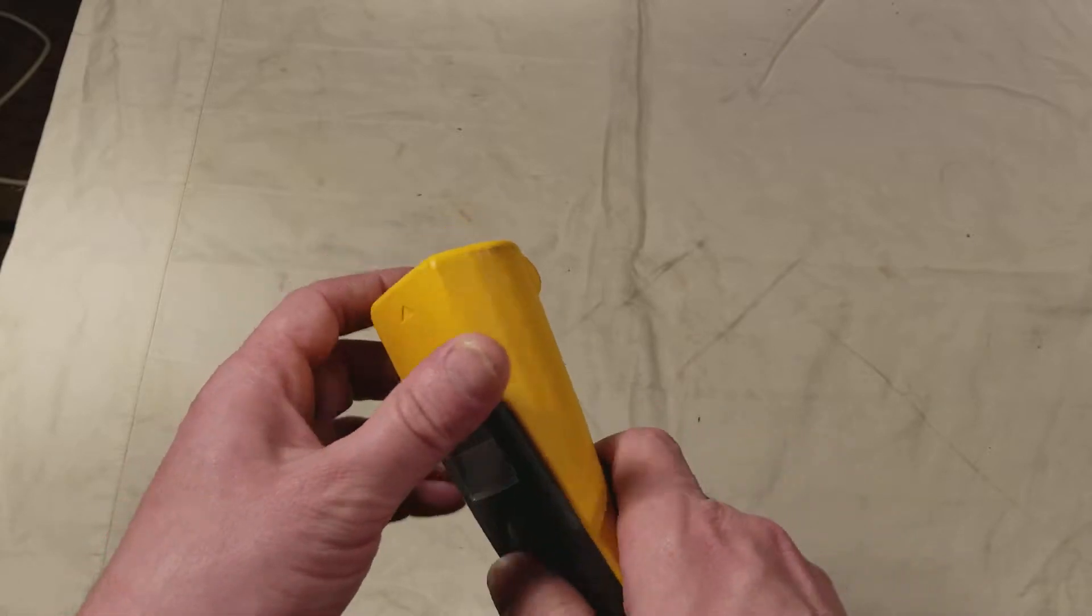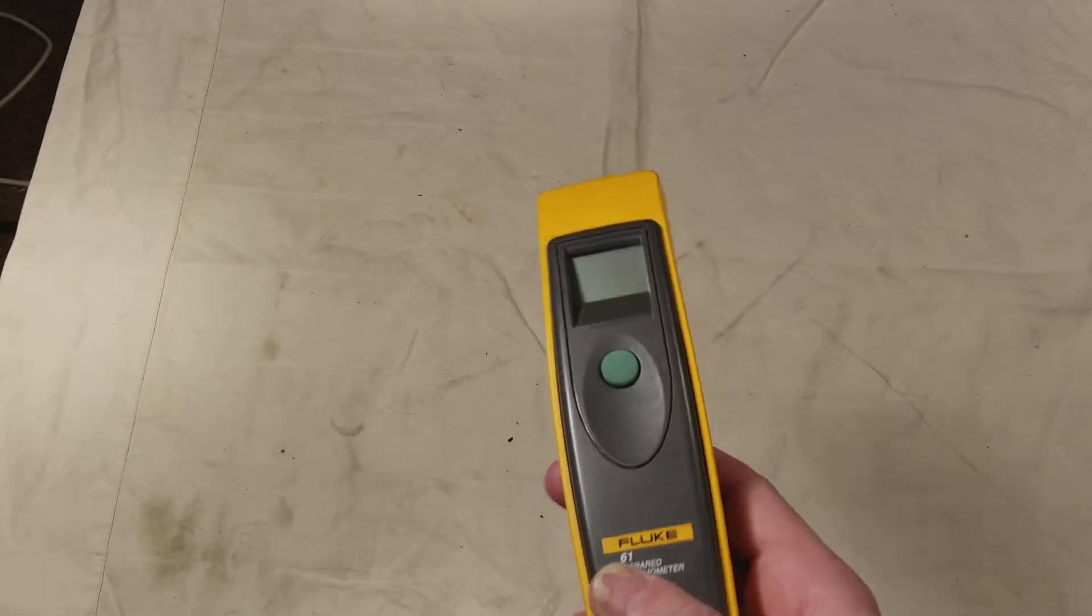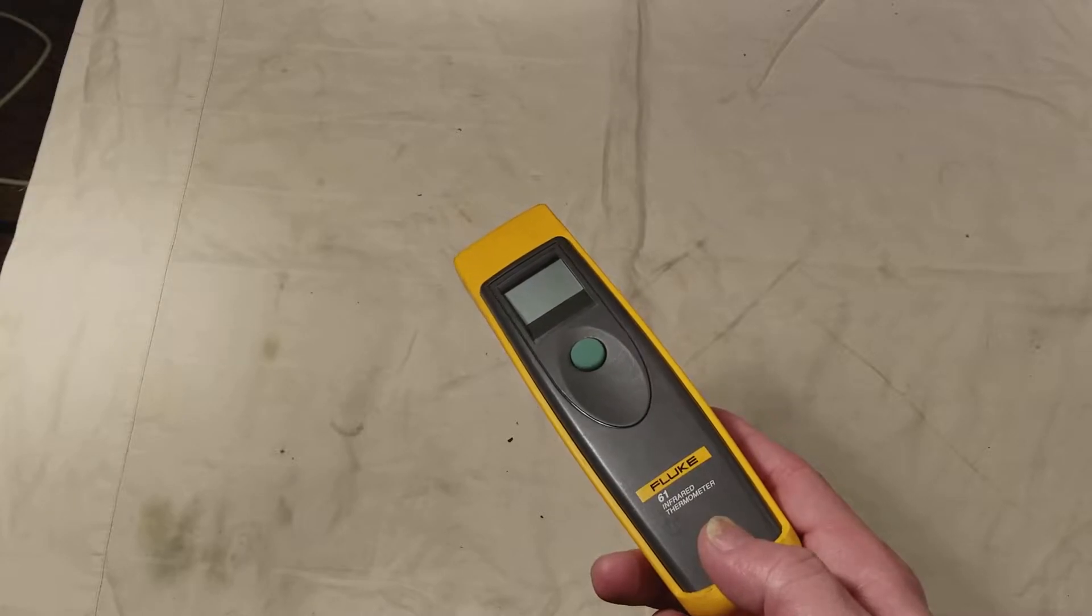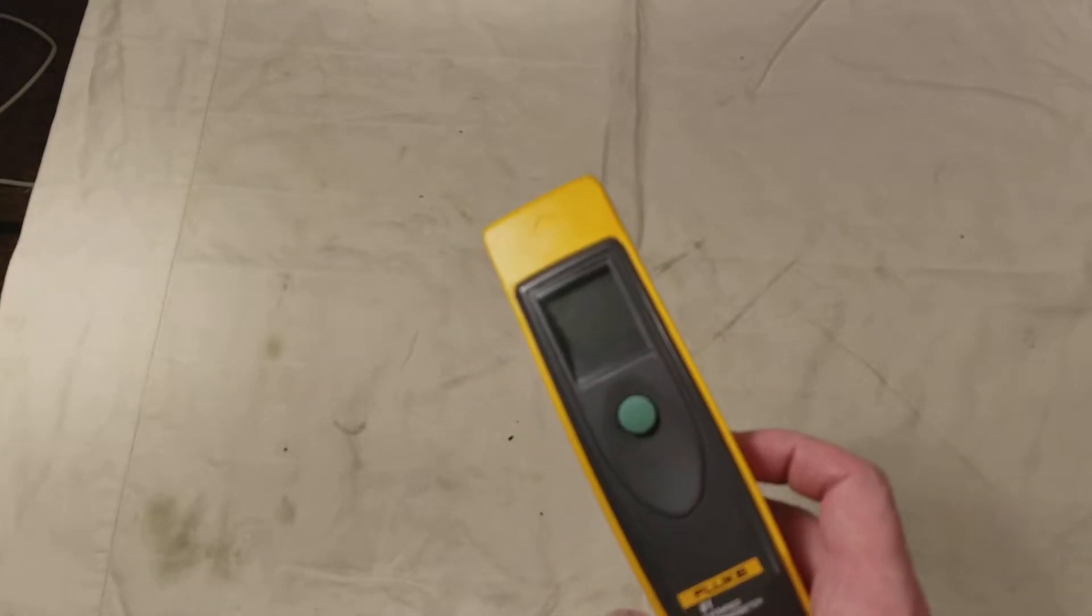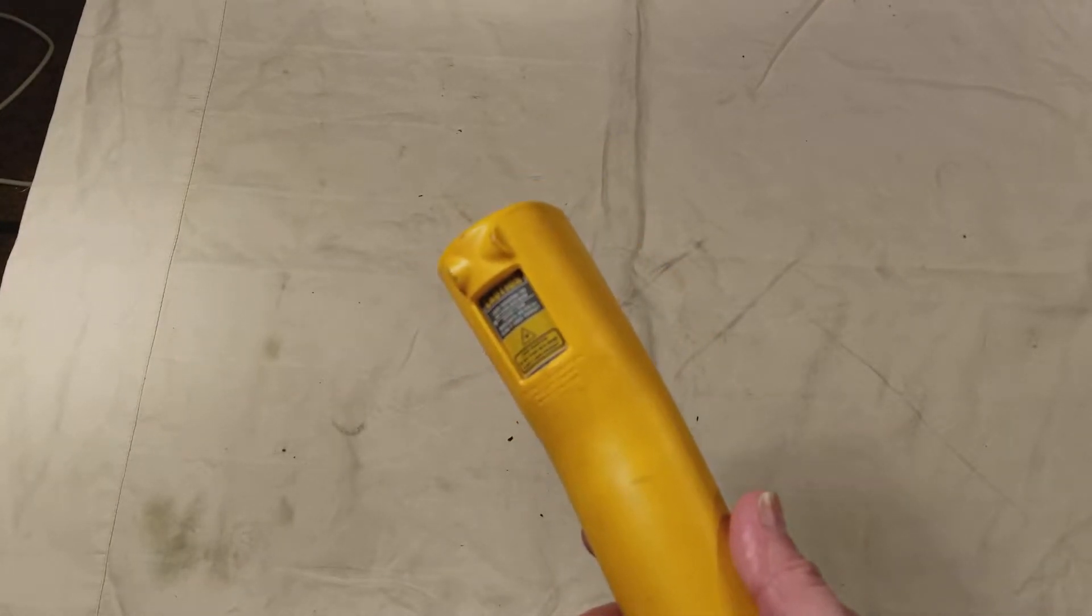It is a wand type instead of the handle type, and I'll do a review of a Harbor Freight version of one of those. That was just a quick review of the Fluke. I think this only goes to 700 degrees.